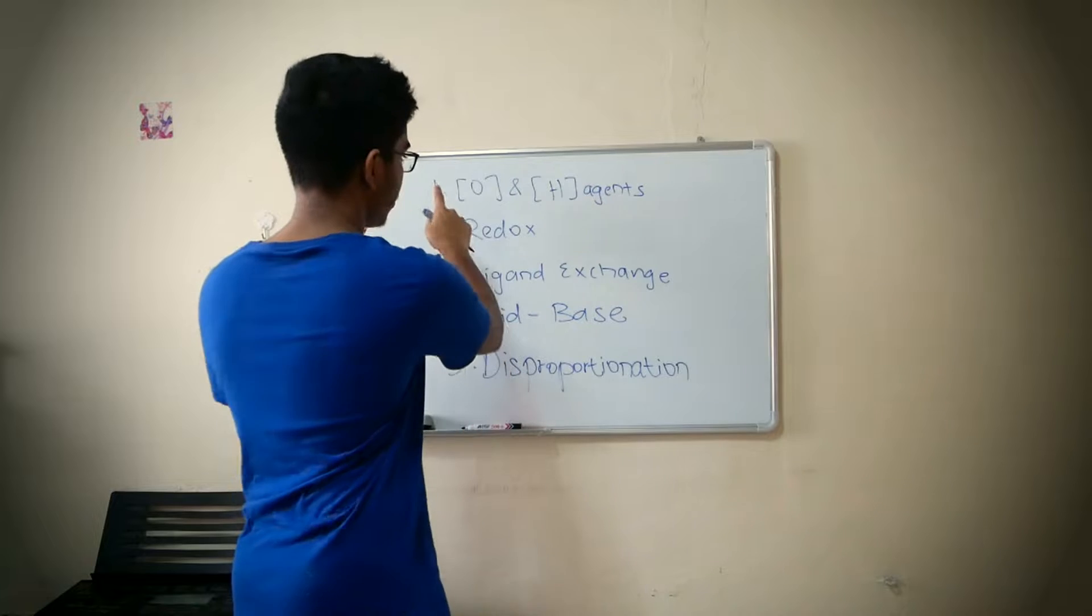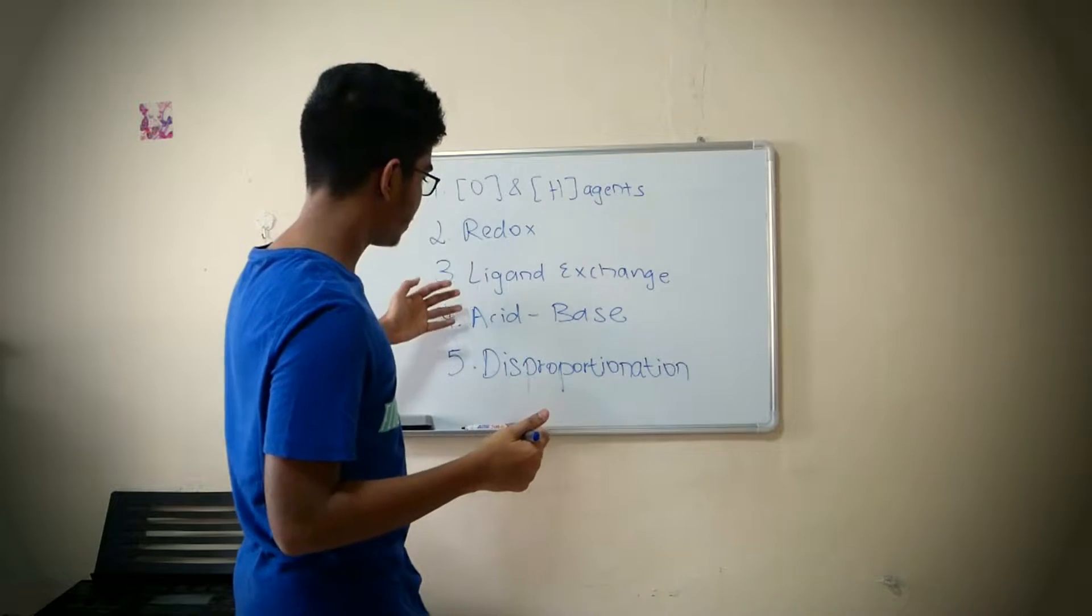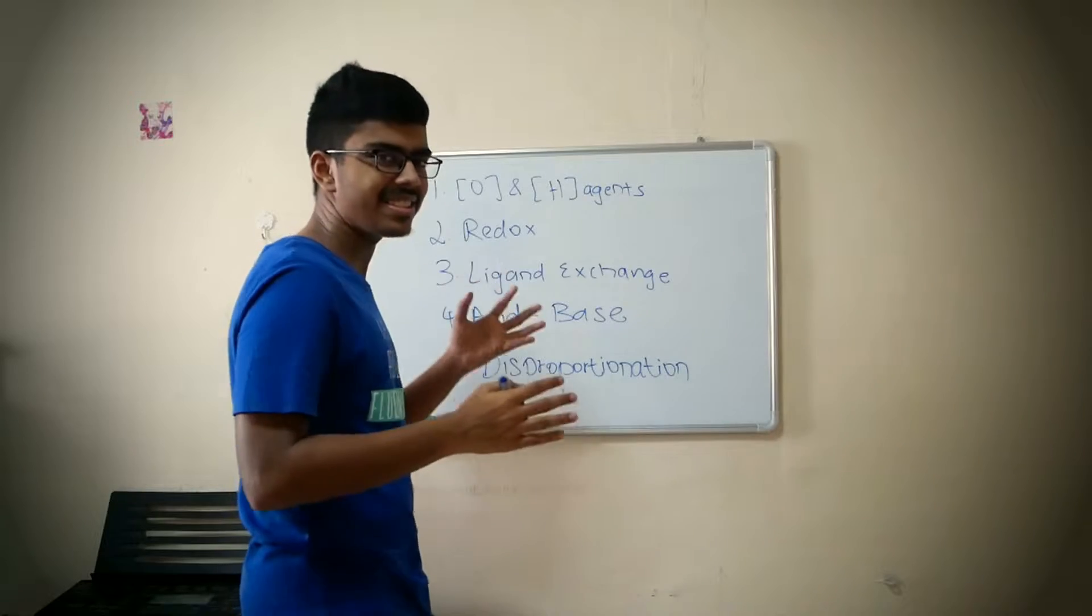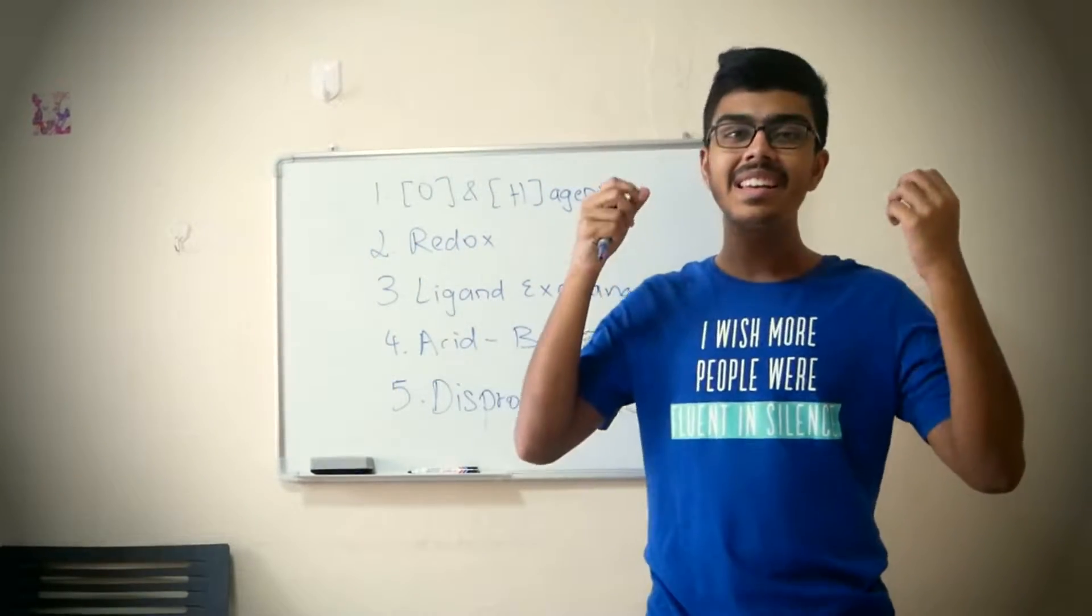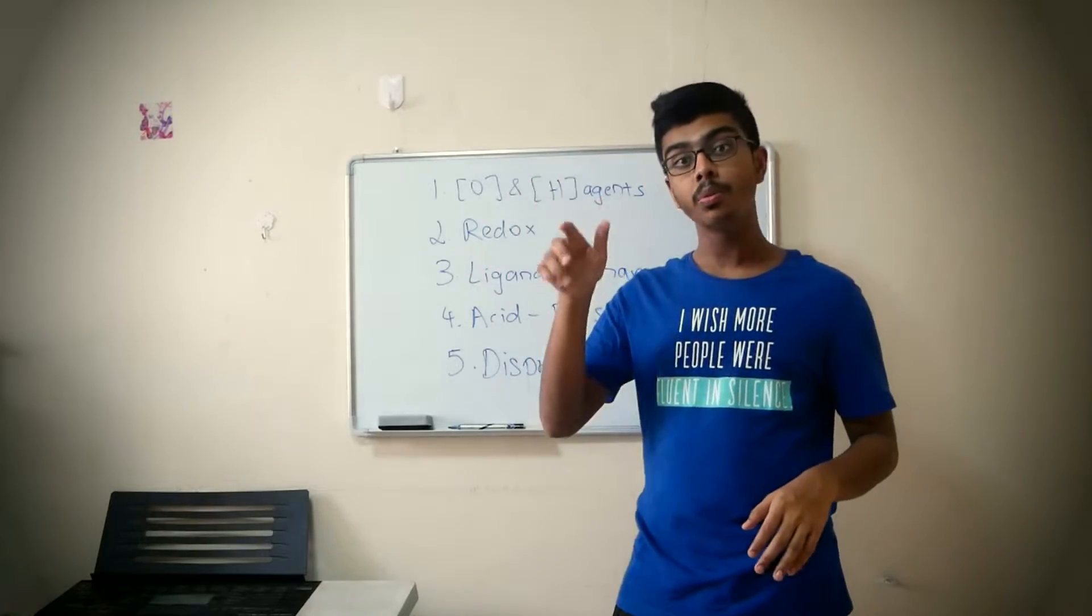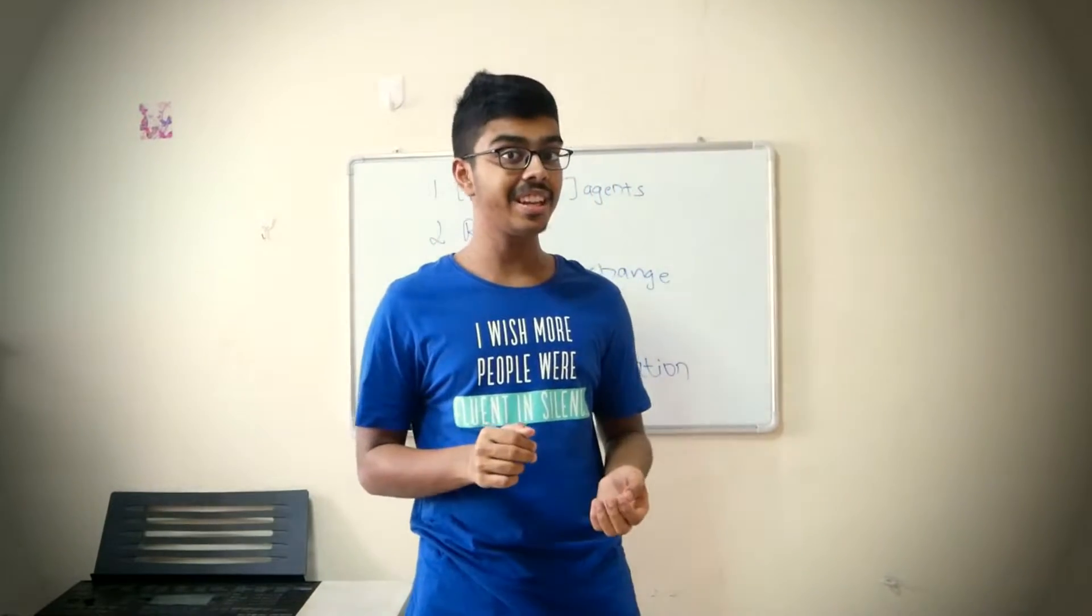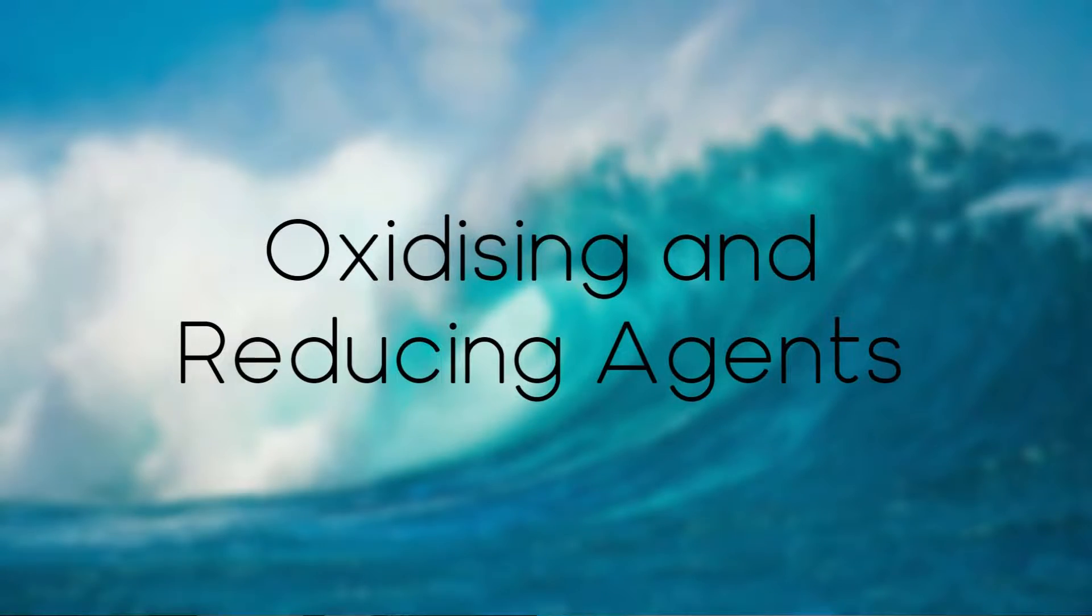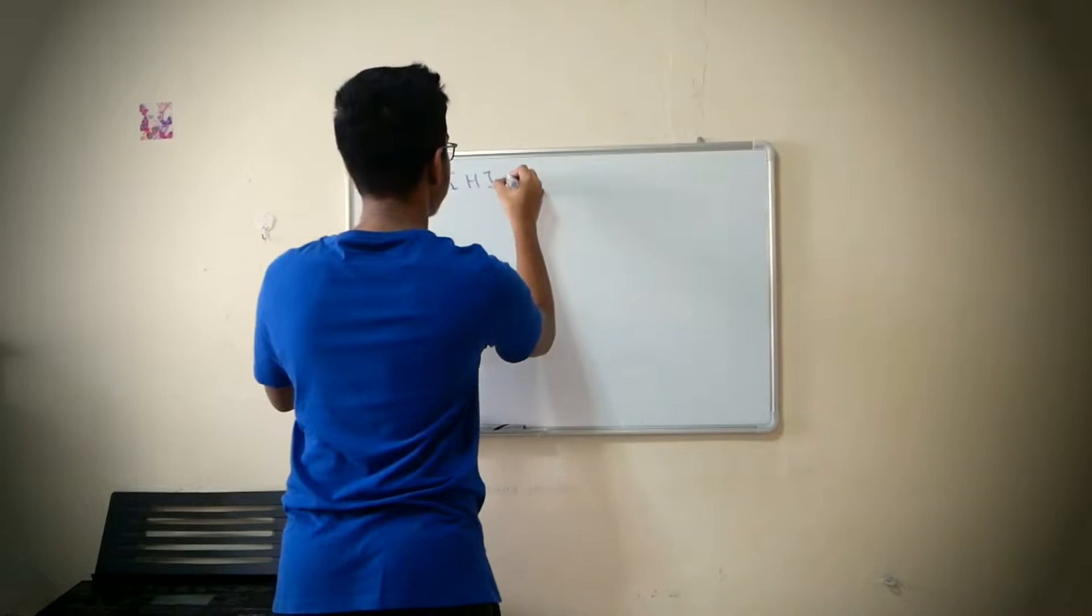Five reactions right now: Oxidizing and reducing agents, redox, ligand exchange, acid base, and disproportionation. These are the five things that Cambridge loves to test. So let's jump right into the first one. By the way, all the white box photos and timestamps are in the description, so you guys can check it out.